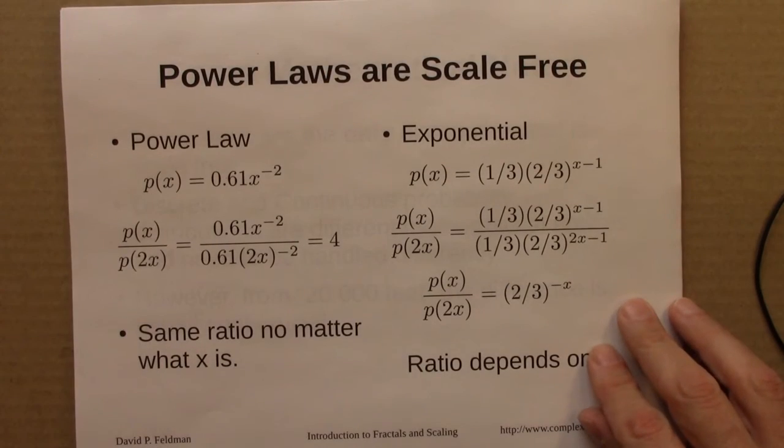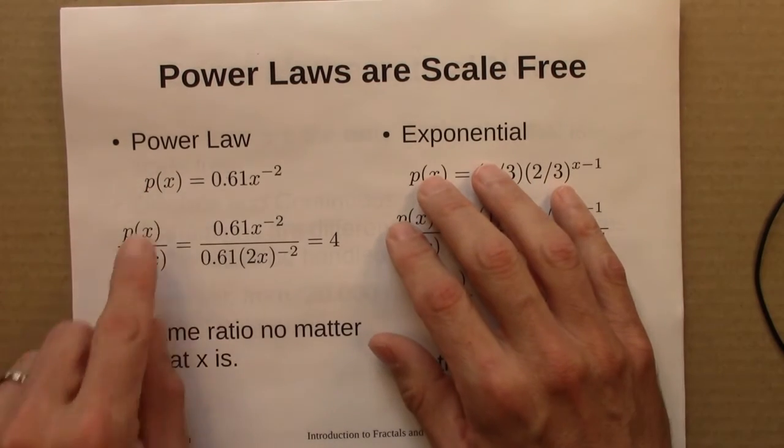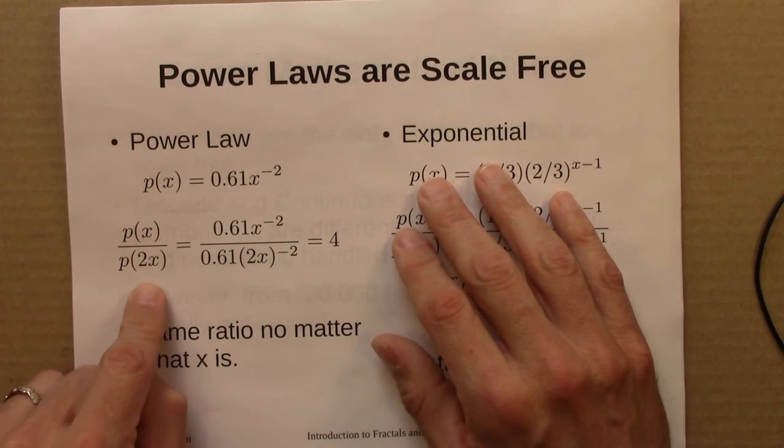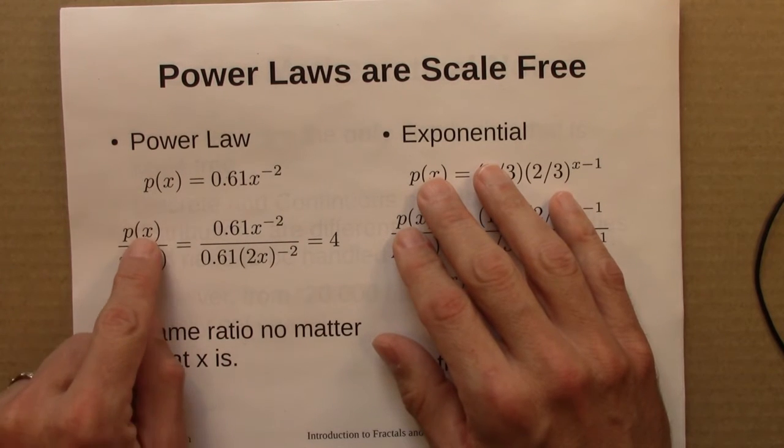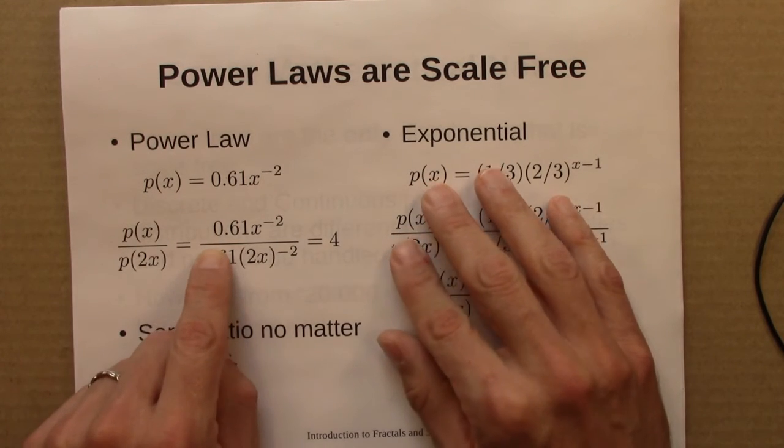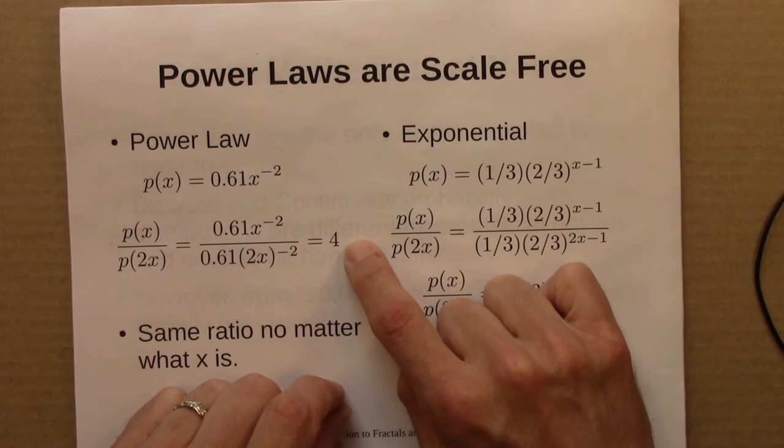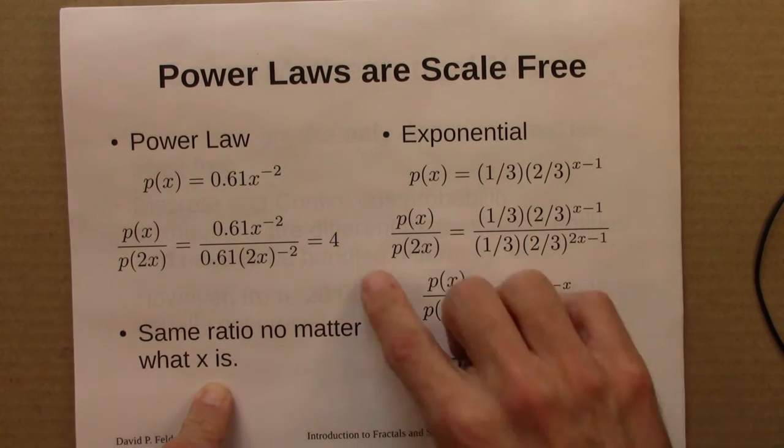Here's a numerical way to see the same thing. Suppose we're looking at a power law of this form, and I want to know how much more likely are events of size x than events of size 2x. Remember, as x gets larger, things are less likely. So we'd expect more of these than of those. Well, I can plug in the formula, do a little bit of arithmetic and algebra, and I get 4. And the key thing is that this ratio of 4 doesn't depend on x. It's the same no matter what x is. There's no x in here.